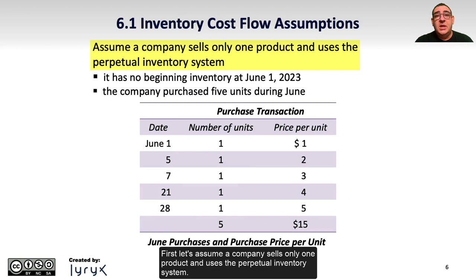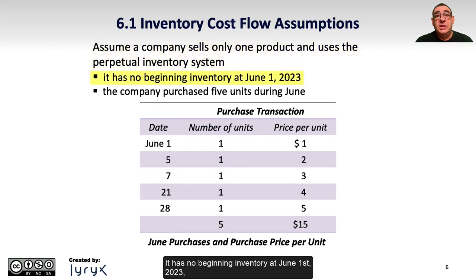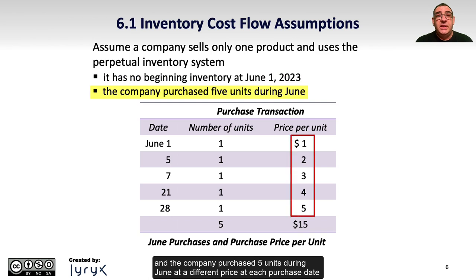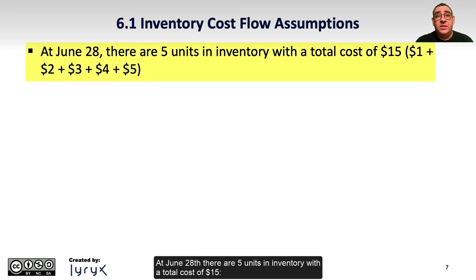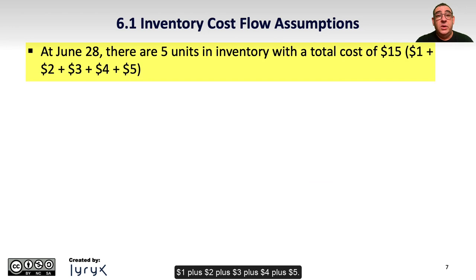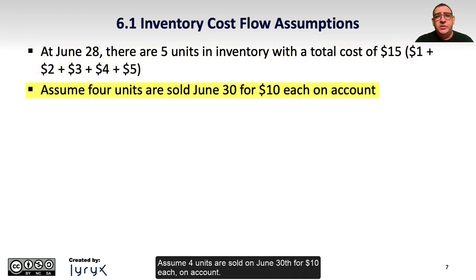First, let's assume a company sells only one product and uses the perpetual inventory system. It has no beginning inventory at June 1, 2023, and the company purchased 5 units during June at a different price at each purchase date, starting at $1 per unit and increasing up to $5 per unit. At June 28, there are 5 units in inventory with a total cost of $15 — 1 plus 2 plus 3 plus 4 plus 5. Assume 4 units are sold on June 30 for $10 each on account.